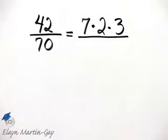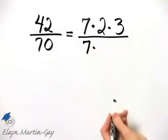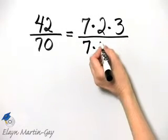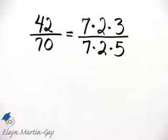And then what about 70? 70, I know, is 7 times 10. And 10 is 2 times 5. So you can double check, but here we have the prime factorization of the numerator and of the denominator.